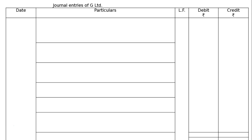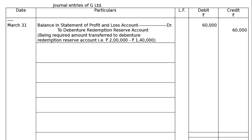Here are the journal entries of G Limited. The date is 2003 March 31st. The company had a balance in this debenture. We need to pass the necessary journal entries for redemption of debentures. You have to take the year 2003. I have not written the year, but I have taken the date.